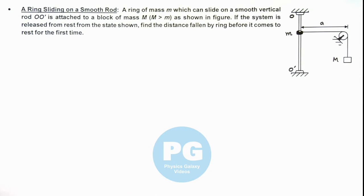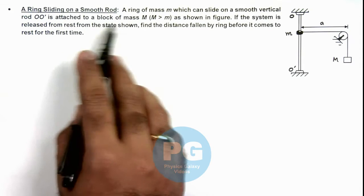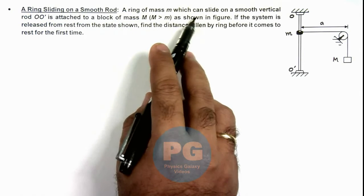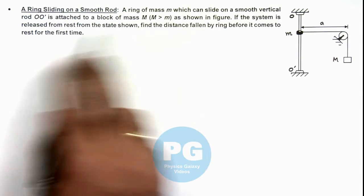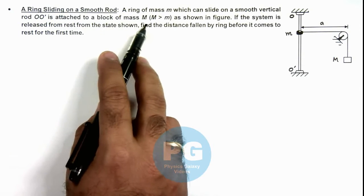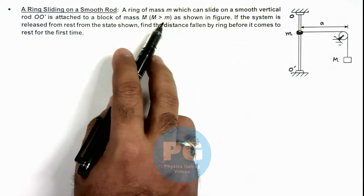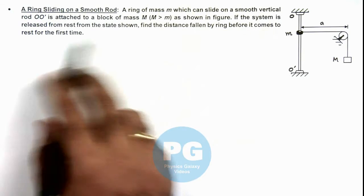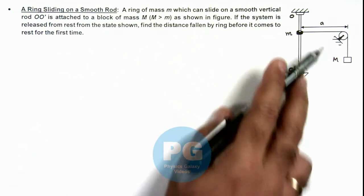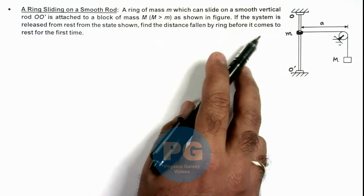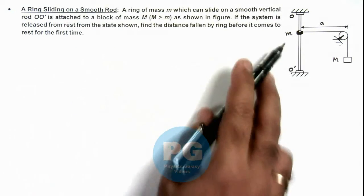In this illustration we'll discuss about a ring which is sliding on a smooth rod. Here we are given that a ring of mass m which can slide on a smooth vertical rod OO' is attached to a block of mass M which is greater than that of the ring, as shown in figure. And it is saying if the system is released from rest from the state shown we are required to find the distance fallen by ring before it comes to rest for the first time.